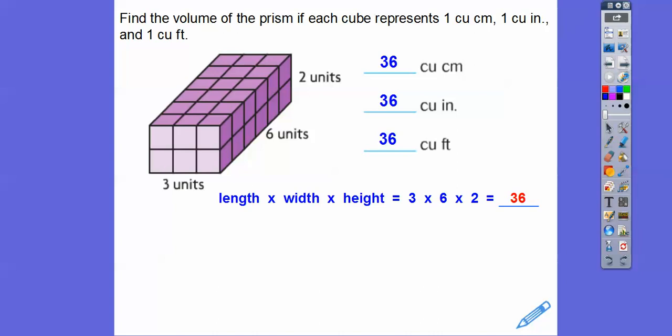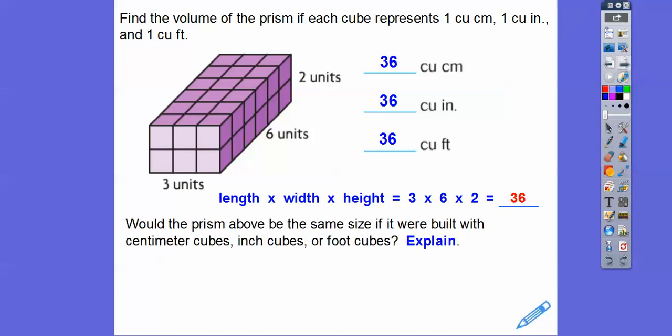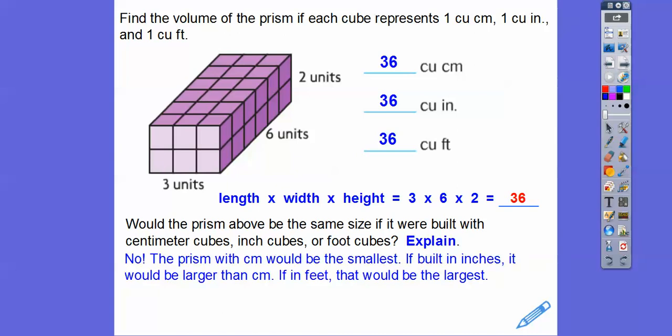Would those prisms be the same size? No — centimeters are smaller than inches, and since there are 12 inches in a foot, a foot is the biggest. So the centimeter prism would be smallest, the inch prism larger, and the foot prism the largest by far.